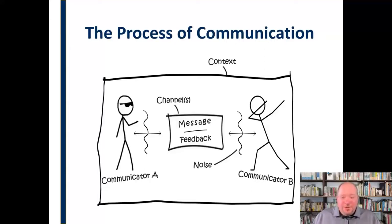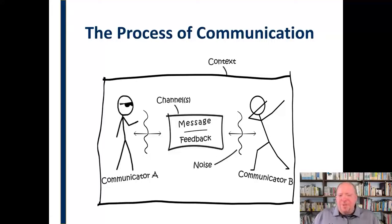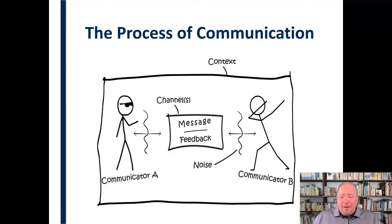There is noise that interferes with the sending and receiving of this message, and that noise could be anything — whether it's physical, physiological, or psychological. All of this happens in a particular context, and that plays an important part. So you put these seven elements together and you have the process of communication. There are a lot of variables at work in all of these, but it really boils down to these seven things. If you haven't watched that video or don't have an understanding of the transactional model of communication, I encourage you to check that out — it'll give you a fuller explanation.